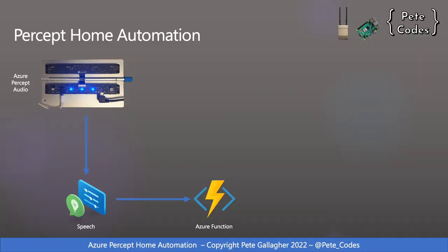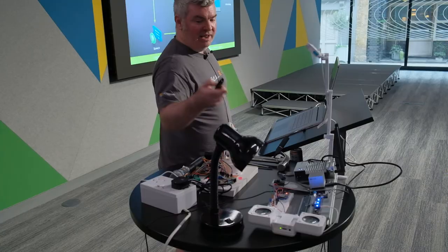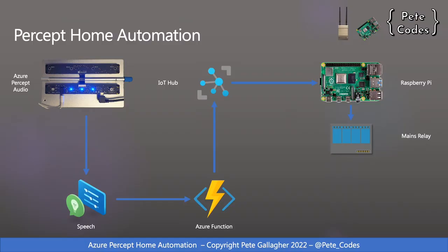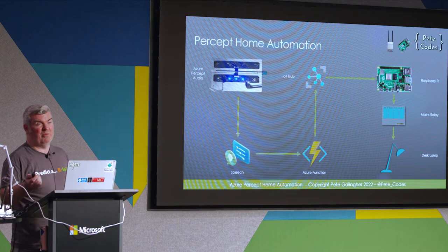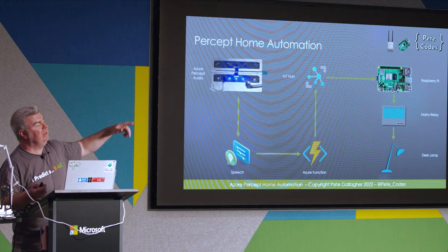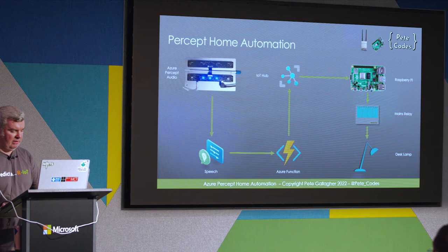We come out of the Azure function, go to an IoT hub, and then from the IoT hub down to my Raspberry Pi, then to a mains relay in the box, and onto a desk lamp. Pretty simple, but there are a few hops to go through and software in two of those places. Let's see what that looks like.